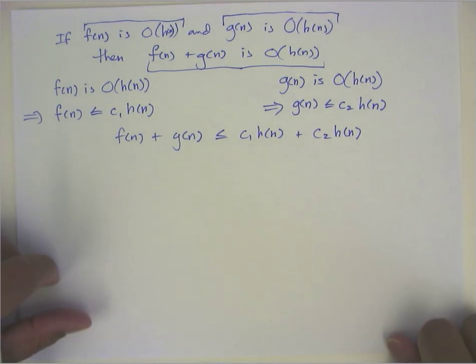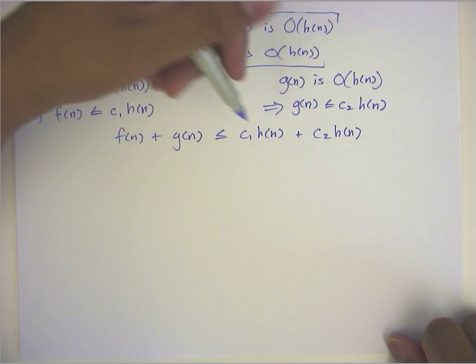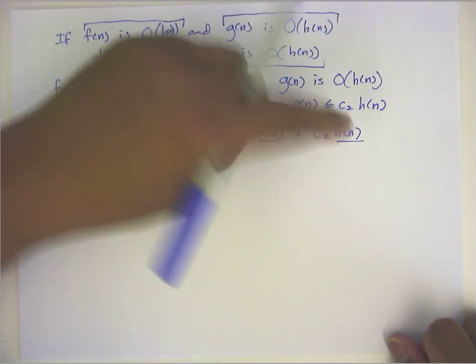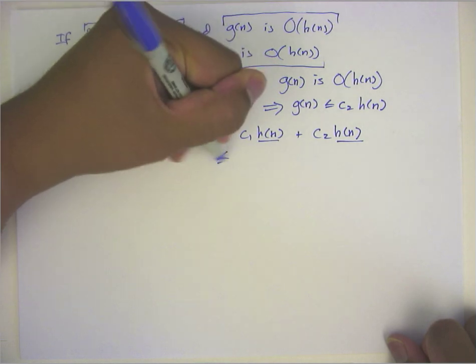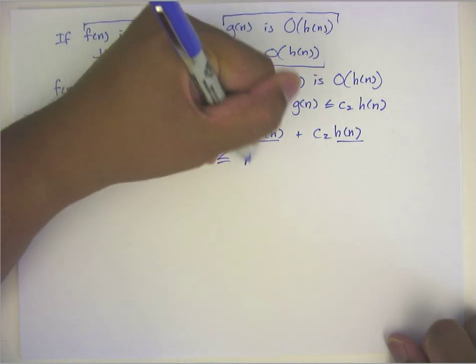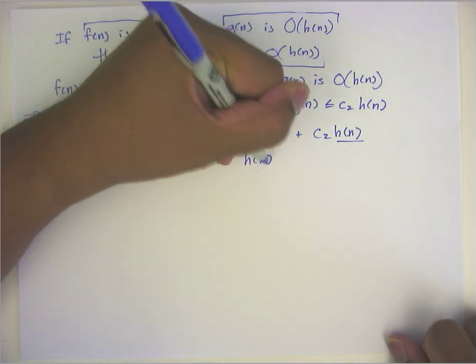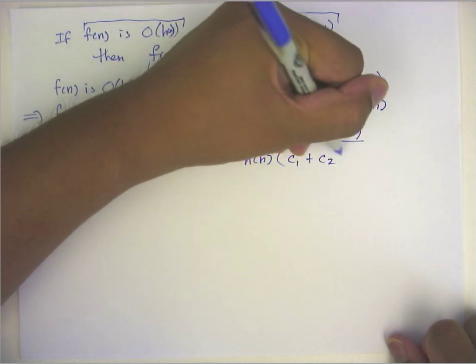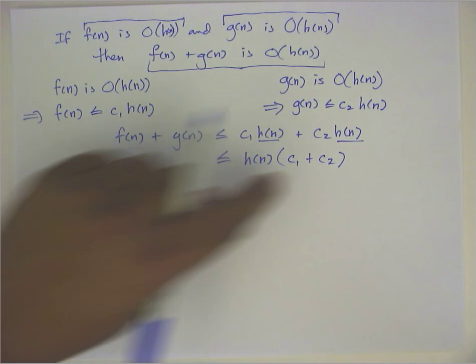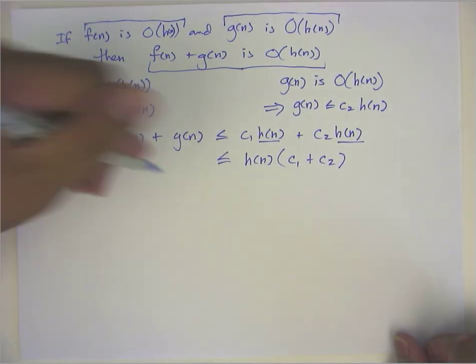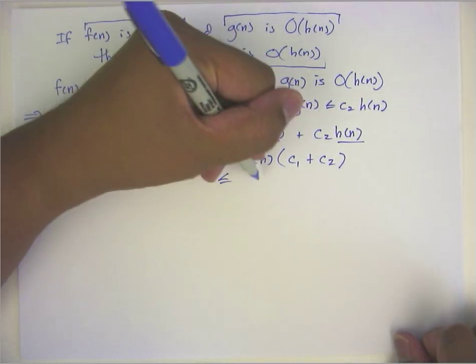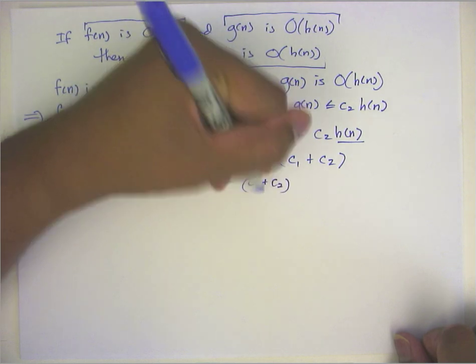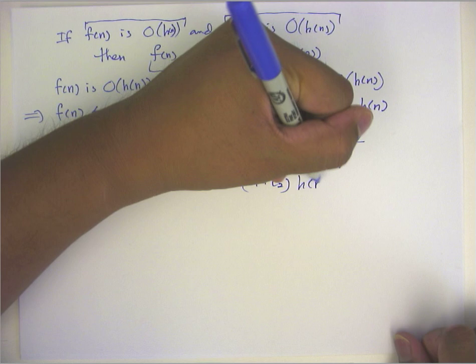So what do we have here on the right hand side? We have h(n) here and here. We can factor that out. And this is going to be less than or equal to h(n) times c1 plus c2. And just kind of rearranging the terms, this is the same as c1 plus c2 h(n).